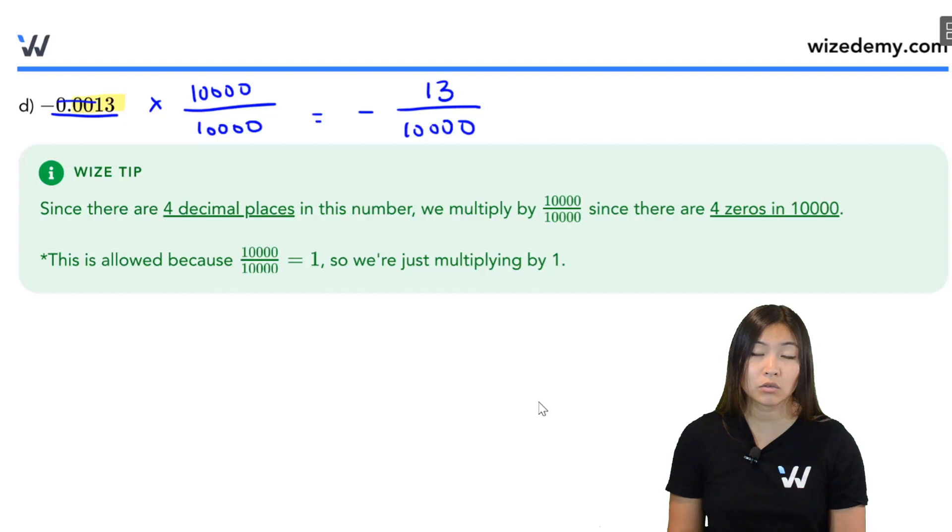There's nothing I can simplify because there's no number that goes into both 13 and 10,000. So this is the rational number.